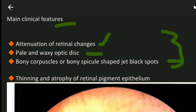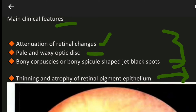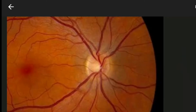Thinning and atrophy of the retinal pigment epithelium is also a feature of retinitis pigmentosa. However, keep in mind this is not a typical feature — it occurs only in the later stage.